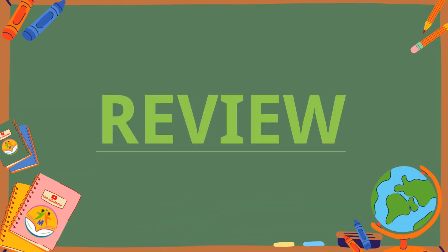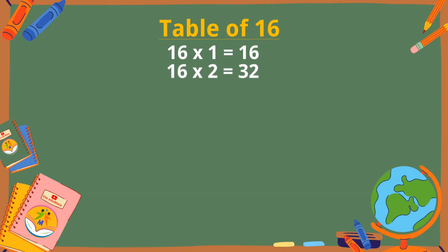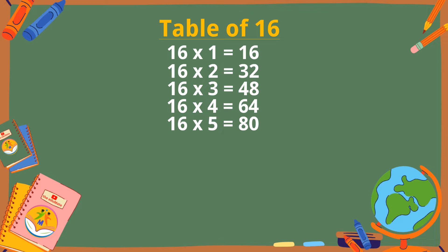Let's revise the table of 16. 16 ones are 16. 16 twos are 32. 16 threes are 48. 16 fours are 64. 16 fives are 80.